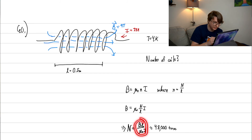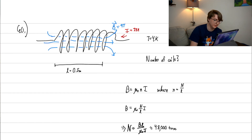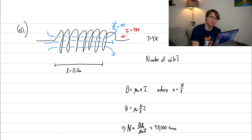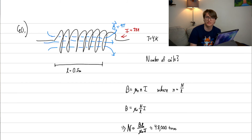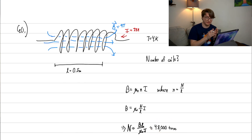Nine Tesla is an enormous magnetic field — the LHC's giant electromagnets, stories high, are only in the hundreds of Tesla range. Solving for n = B/(μ₀I) and then N = nL, we get about 48,000 turns per meter. That's an enormous amount of winding needed to achieve that field strength.